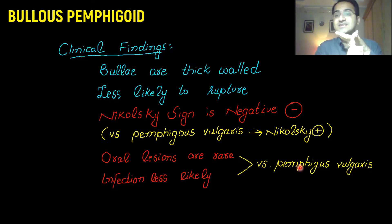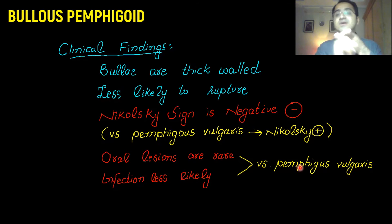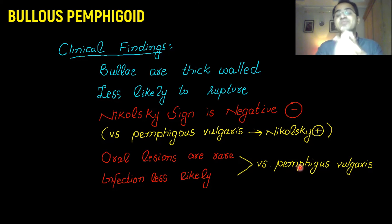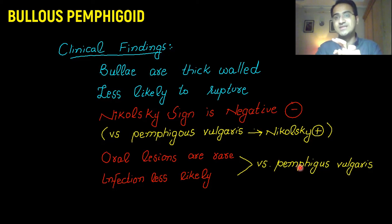Three main differences between pemphigus vulgaris and bullous pemphigoid: first, bullous pemphigoid is mainly found in old-age patients while pemphigus vulgaris is more common in younger patients; second, oral lesions are more common in pemphigus vulgaris while they are absent in bullous pemphigoid; third, Nikolski sign is negative in bullous pemphigoid while it is positive in pemphigus vulgaris.